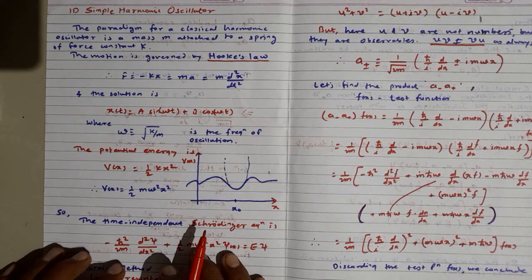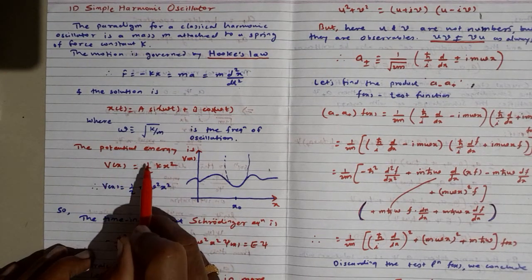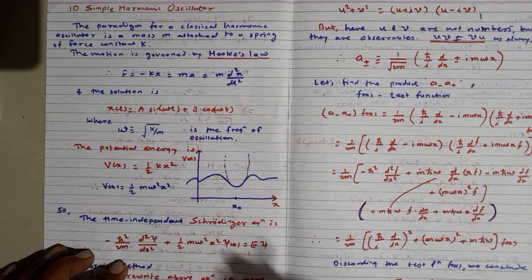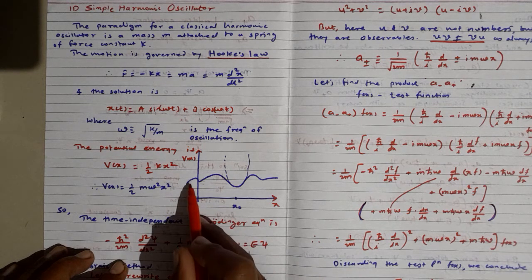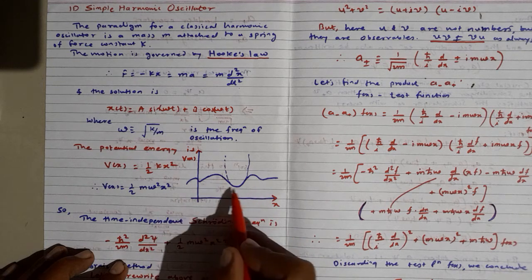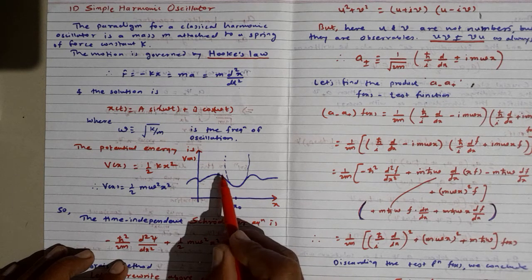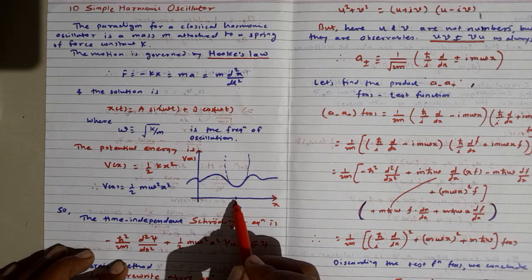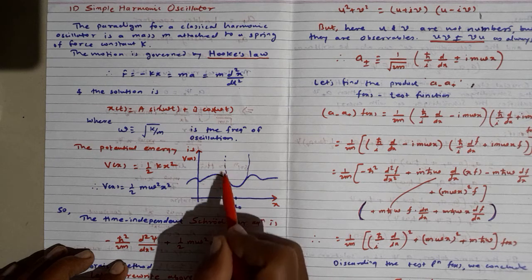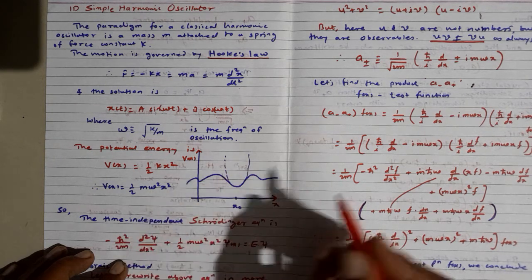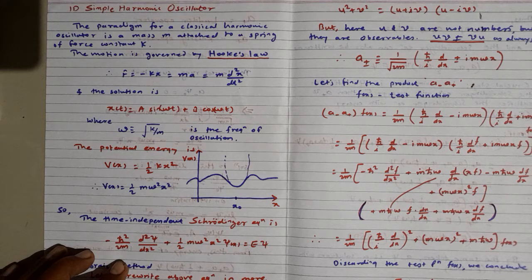The potential energy corresponding to the simple harmonic oscillator is ½kx², which represents a parabola graphically. This is the general behavior of a particle performing some motion. If we consider a part of that motion around x₀, the behavior of the particle looks to be an ideal parabolic path, but there is no such particle which can perform ideal simple harmonic oscillations.